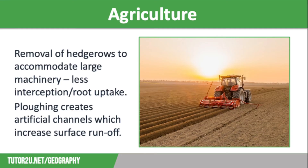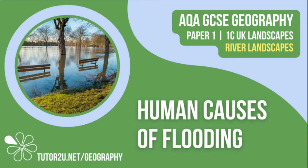Changes in farming also mean that less land is actually needed, as intensive farming is characterised by huge sheds, concrete yards, and vast polytunnels. So farmers often sell off fields to property developers as they can make more money that way. And again, this means that more land is covered in impermeable surfaces such as tarmac and concrete. That concludes this Tutor2U revision video focusing on human causes of flooding. Thank you for watching.